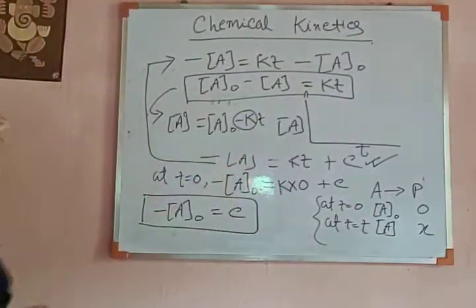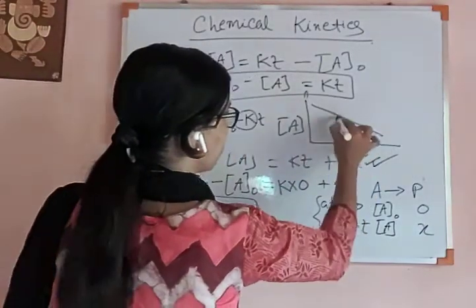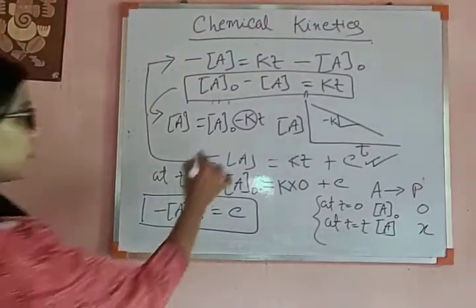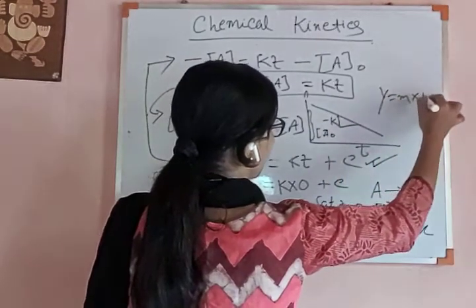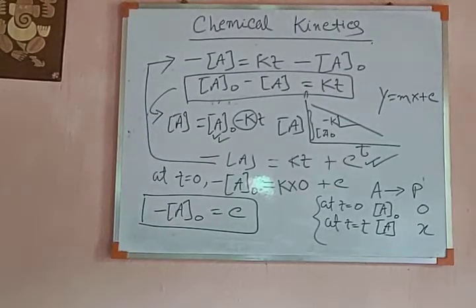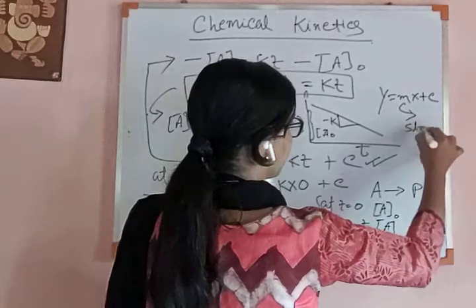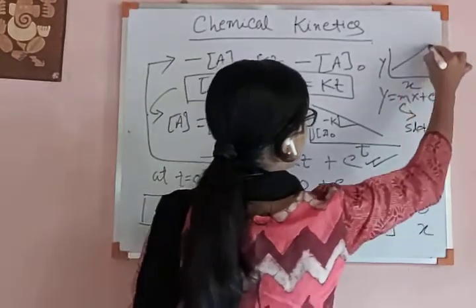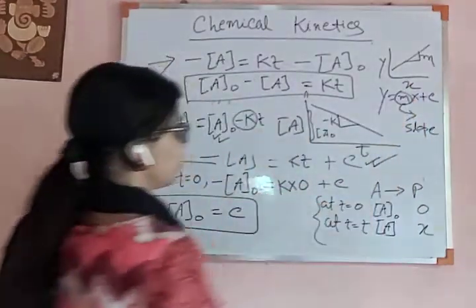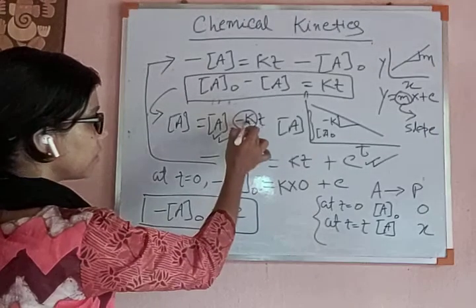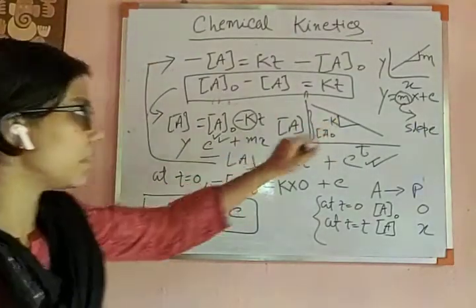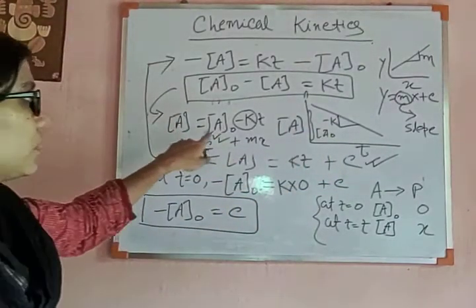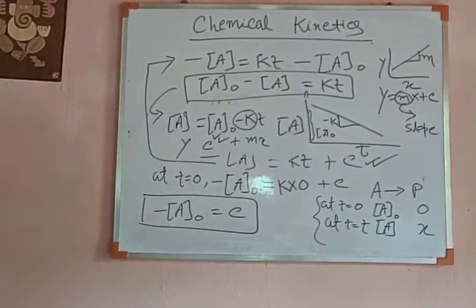When plotting concentration of A versus T, the slope is negative — minus K — because of the minus sign, and A₀ is the intercept. This graph follows Y equals Mx plus C, the straight line equation, where M is the slope and C is the intercept. Here T is like X and A is like Y, and since the slope is negative the line goes downward.